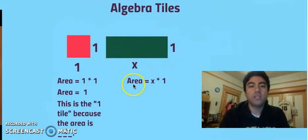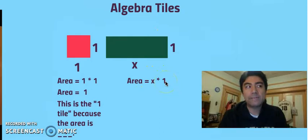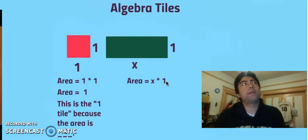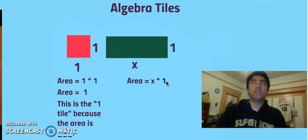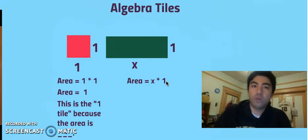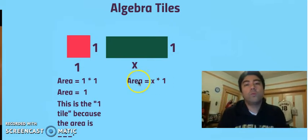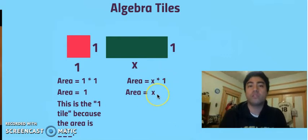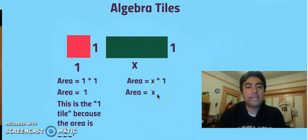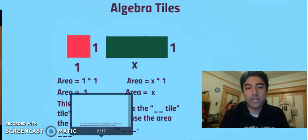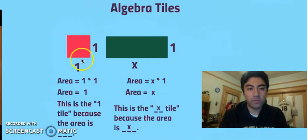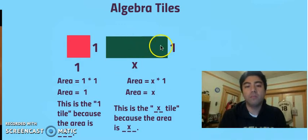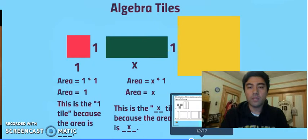To find the area of this tile, we do X times one — length times width. What is five times one? Five. What is seven times one? Seven. So X times one is just X. Because the area is X, we call this the X tile. So now we have the one tile with area one, and the X tile with area X.